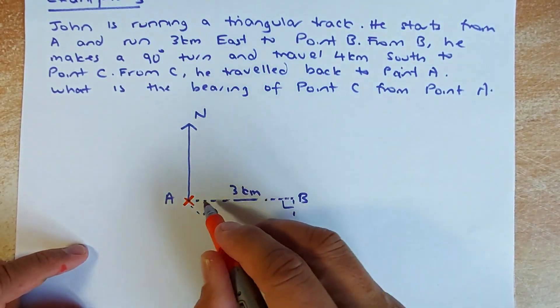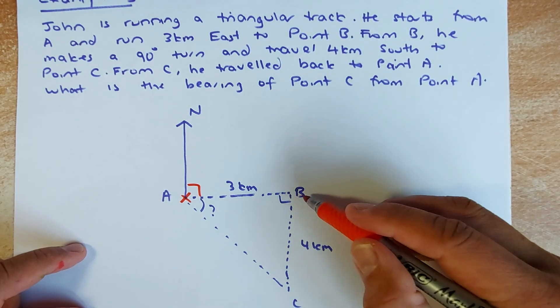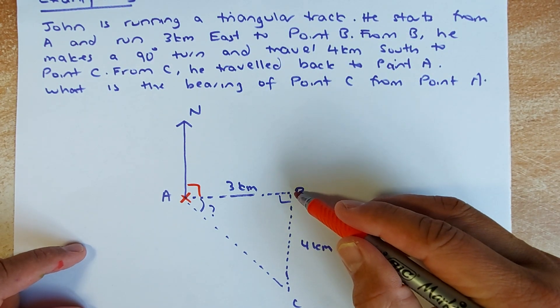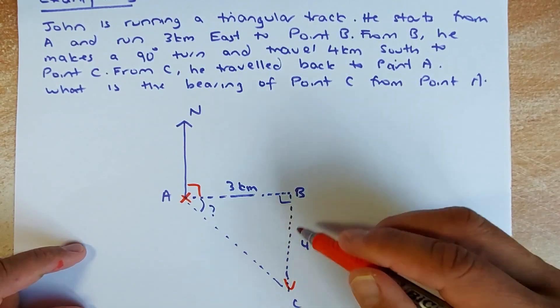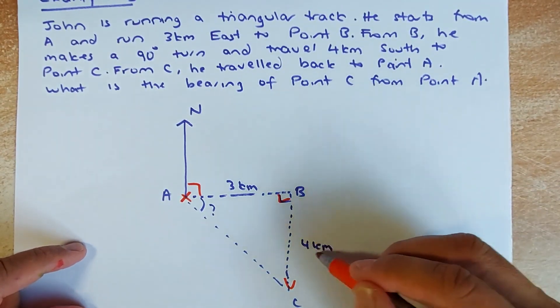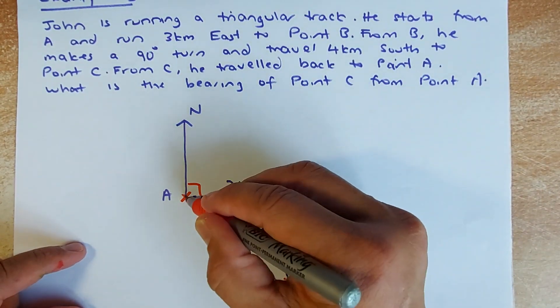East is 90 degrees. And then from the point B he is going to make a 90 degrees turn and travel 4 kilometers south. So this is 90 degrees and 4 kilometers. The question asks you, then from C he is going to run back to A.